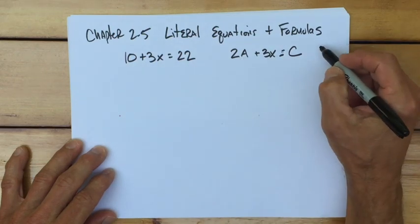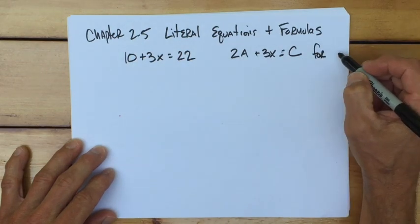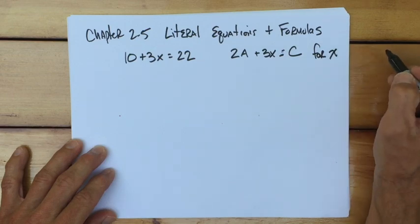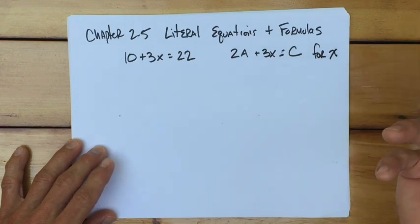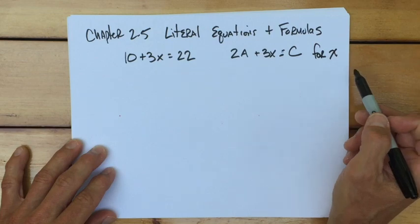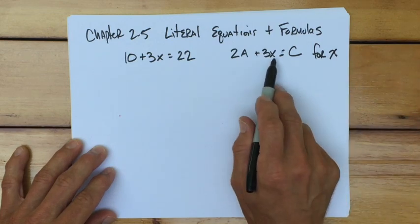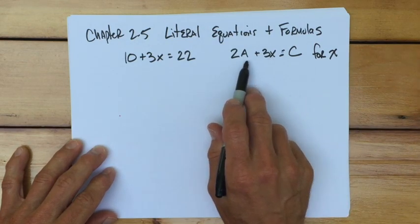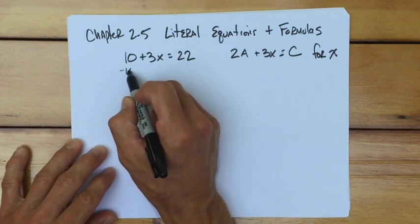When there's multiple variables, normally after the problem or in the directions, it will tell you what to solve for. They can pick any of the variables that are involved. So in this case, we're going to solve this one for the letter x.